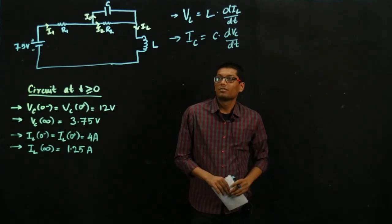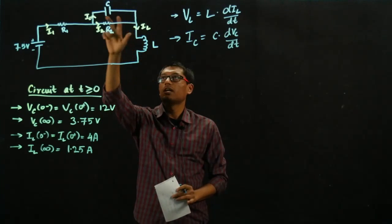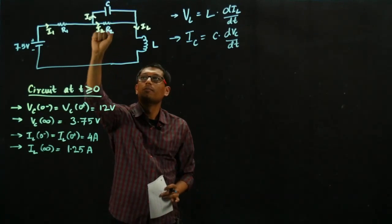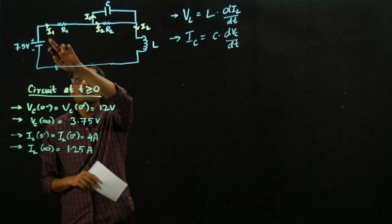Now we want to find out the characteristic equation governing the voltage across the inductor and the current going through the capacitor. So if you look at this circuit, the current I1 is flowing this way.